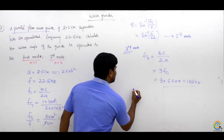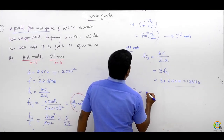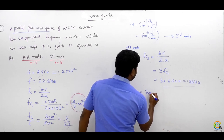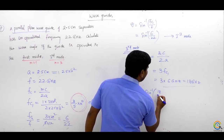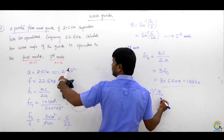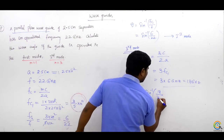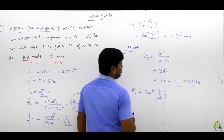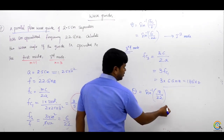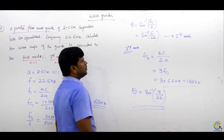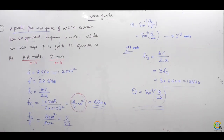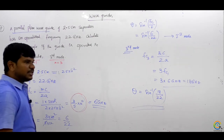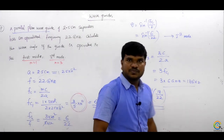For the third mode, the tilt angle is theta = sin⁻¹(fc3/f) = sin⁻¹(18/22). This is how you find the tilt angle for these kinds of questions.